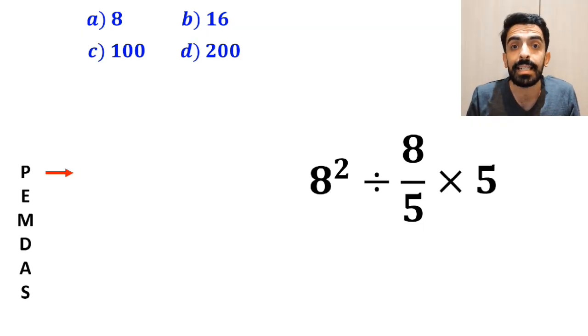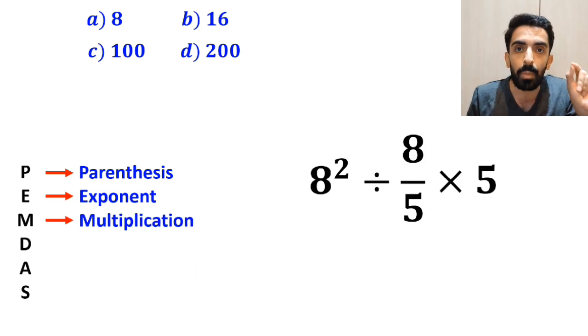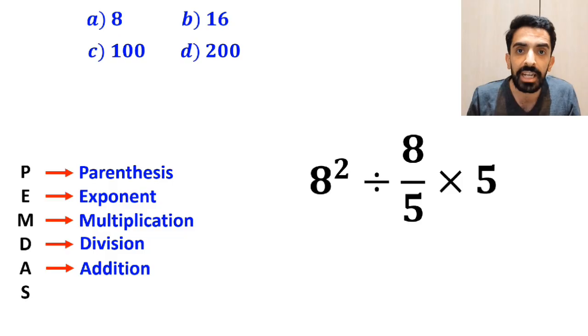In this rule, P stands for parentheses, E stands for exponent, M stands for multiplication, D stands for division, A stands for addition, and S stands for subtraction.